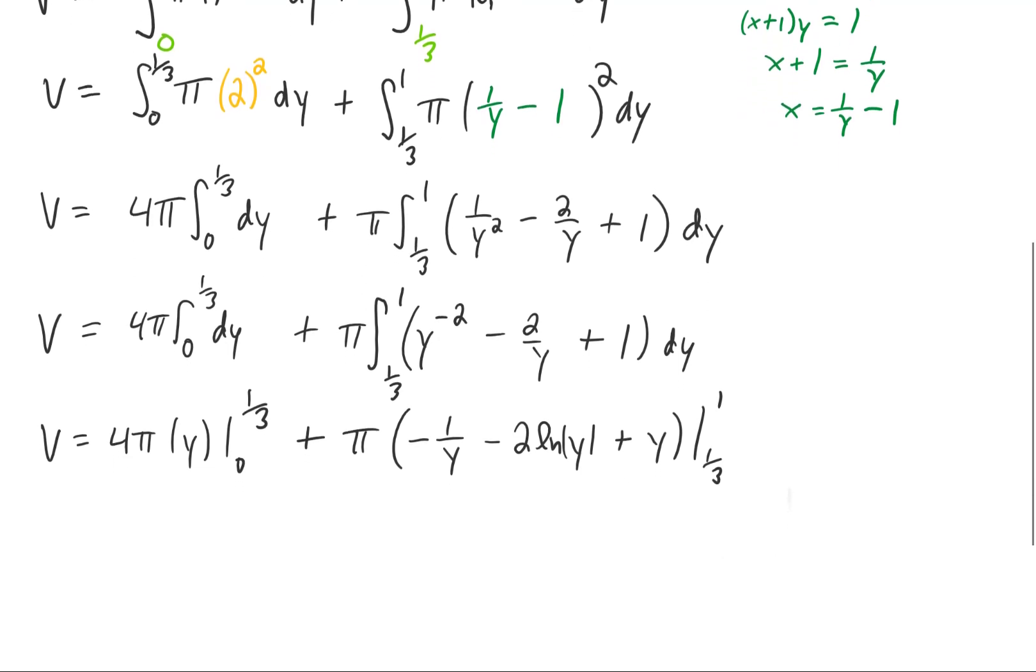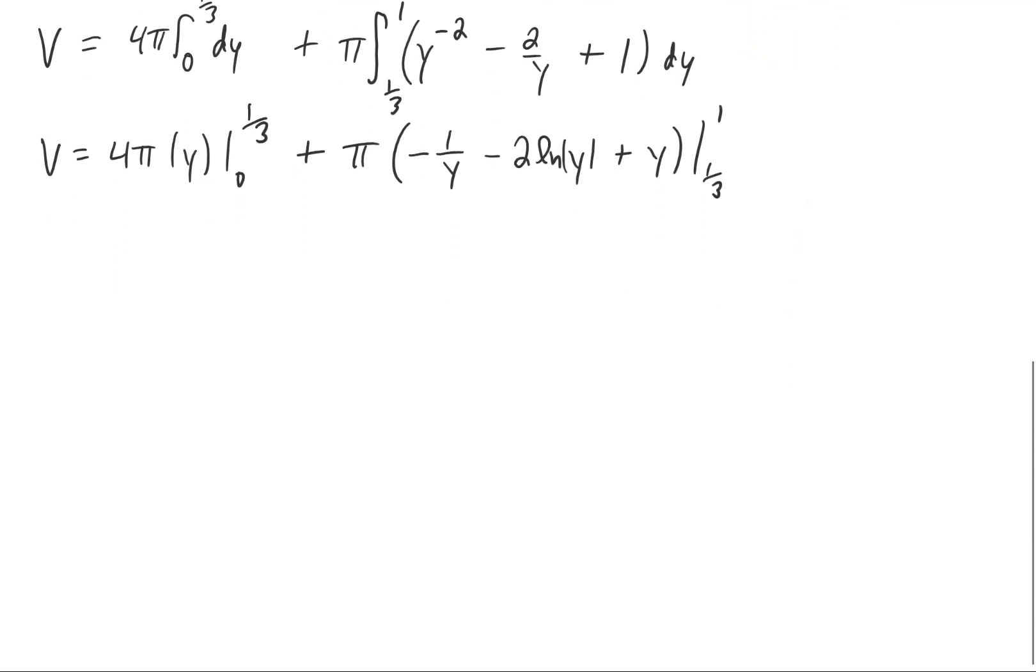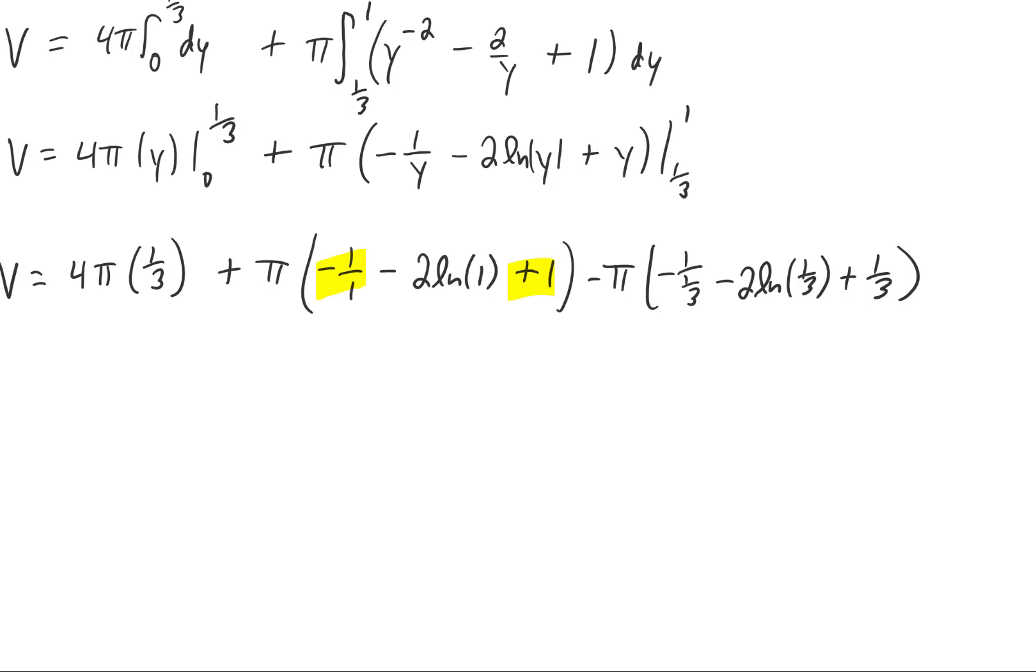Now completing this integration just means plugging in the limits and simplifying. You'll notice that this negative one and this positive one cancel. You'll also recall that the natural log of one is zero, so this entire term just goes to zero. As for the last term, one over one-third is just three. Two natural log of one-third doesn't simplify further, and one-third doesn't simplify any further as well.